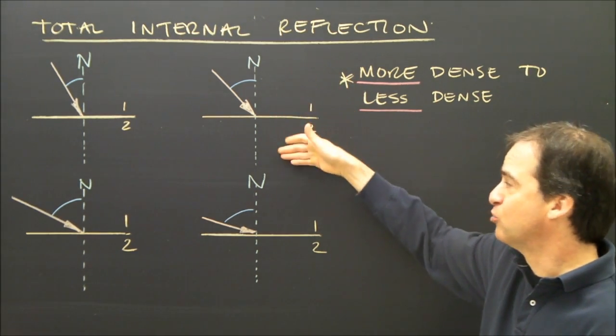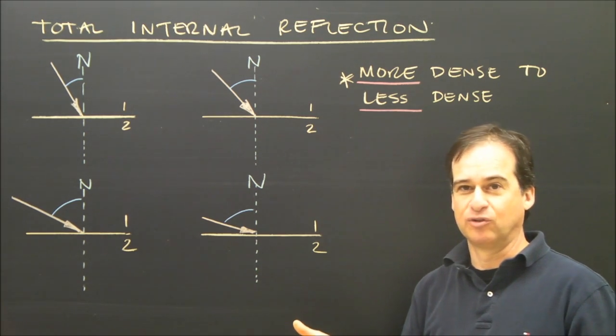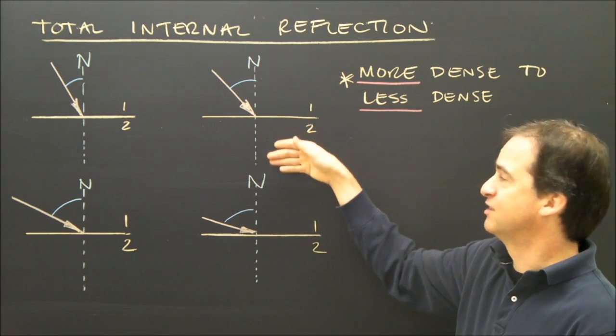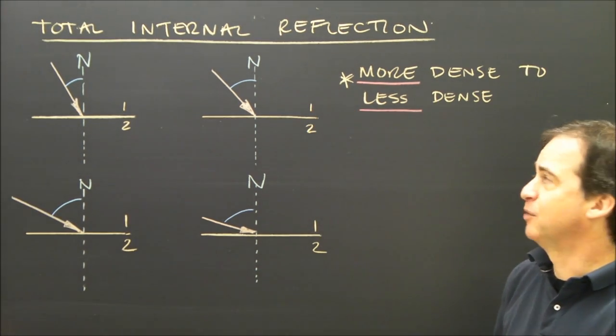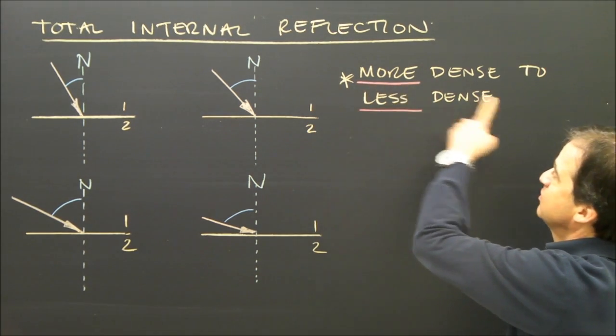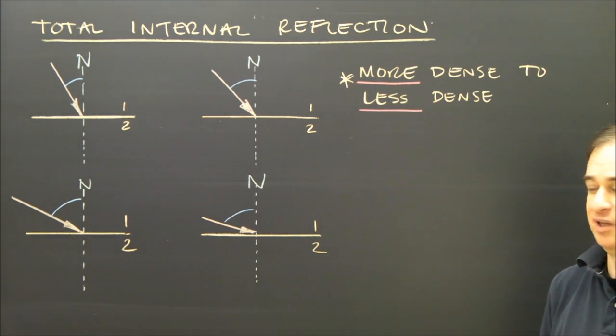So from air to water you don't get total internal reflection because the air is less dense than water. From water to air you would get it because the light is traveling from a more dense medium to a less dense medium.